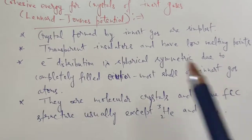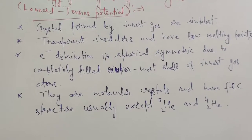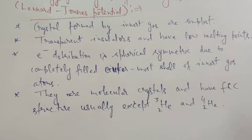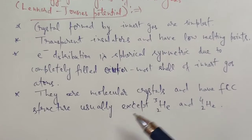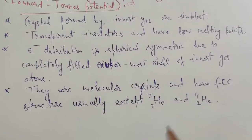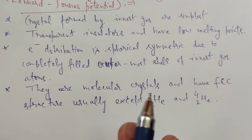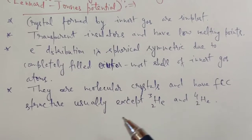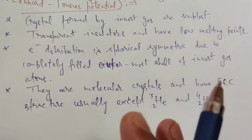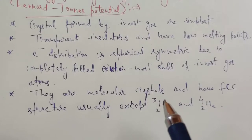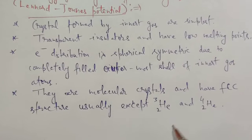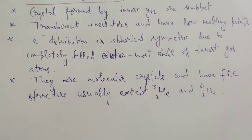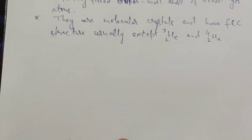Cohesion in inert gas crystals is due to the van der Waals or London interaction, which arises from dipole-dipole interaction. There is also a repulsive interaction: when atoms come close to each other and are about to overlap, they repel due to the Pauli exclusion principle, since their electronic distributions cannot overlap.